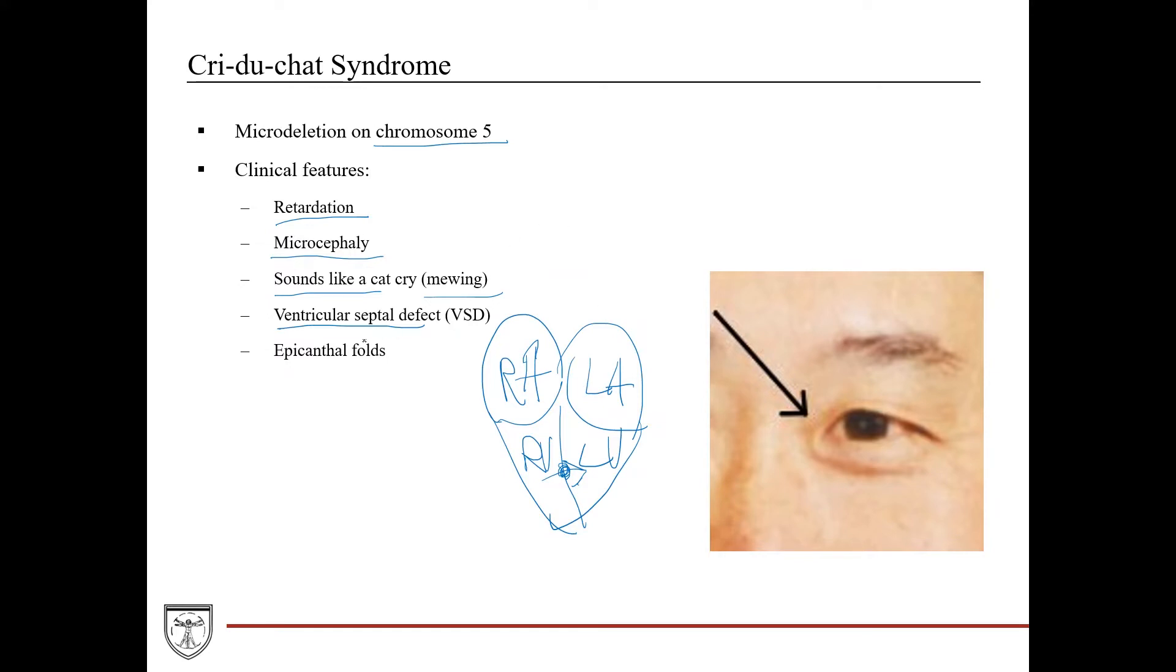They also have some unique facial features. They have a round face with full cheeks, and they have widely spaced eyes, and then they'll have these epicanthal folds, which you see in the picture here, which is a fold off the upper eyelid that then covers the corner of the eye, as you can see here, and so this is another feature that they can have.